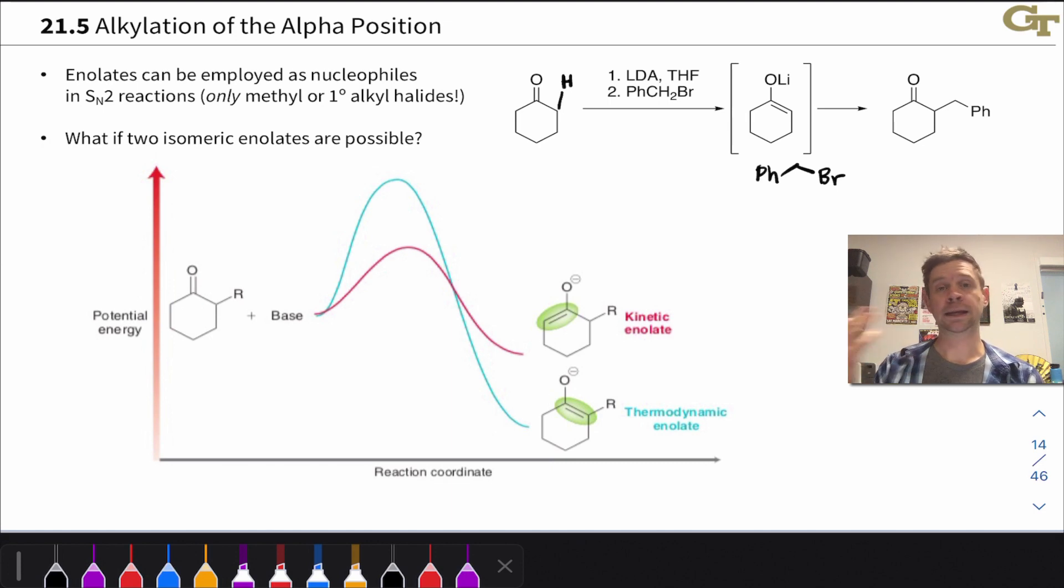Now that said, enolates are nucleophiles at carbon, and so one thing that we may think of pretty quickly is, what about an alkyl halide electrophile? Could I do an SN2 reaction, for example, with benzyl bromide, to create a carbon-carbon bond between the alpha carbon of a ketone and that benzylic carbon of benzyl bromide? And the answer is yes, we can.